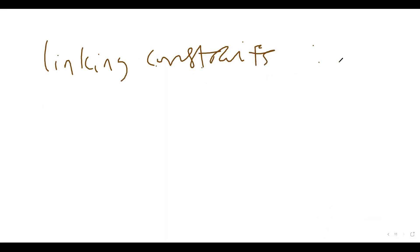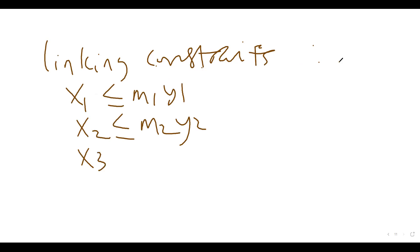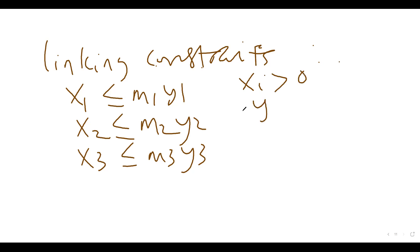Here is the linking constraint: X1 is always less than or equal to M1·Y1; X2 is always less than or equal to M2·Y2; X3 is less than or equal to M3·Y3. This is a linking constraint and it helps you. Now, what is M1, M2, M3 — what is Mi? The Mi will ensure that any time Xi is positive, then Yi is 1. Take a typical example and you will see this.